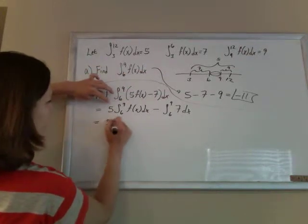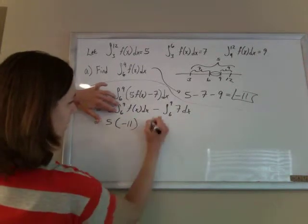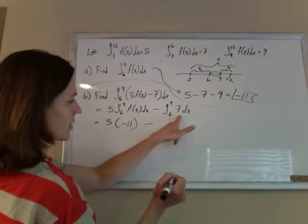So I have 5, and the integral from 6 to 9 is negative 11, we just found that, and then minus, now I just have to take this integral.